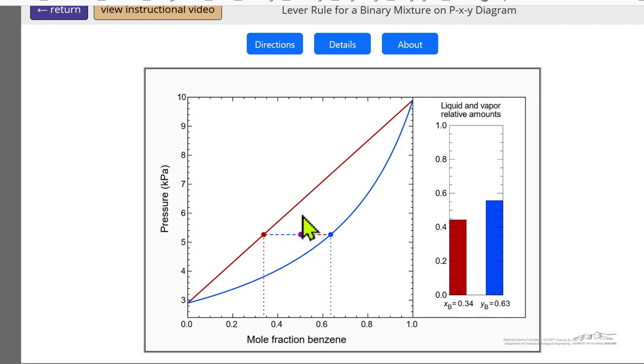So the lever rule helps you to visually see that if you see a point that's closer to the liquid side, there's more liquid and less vapor. And this distance is proportional to how much liquid.